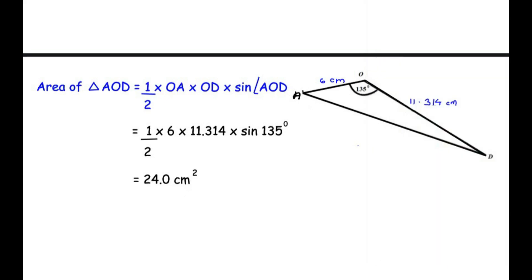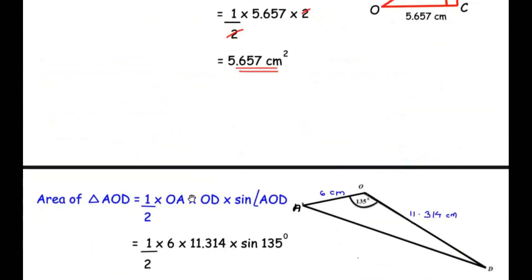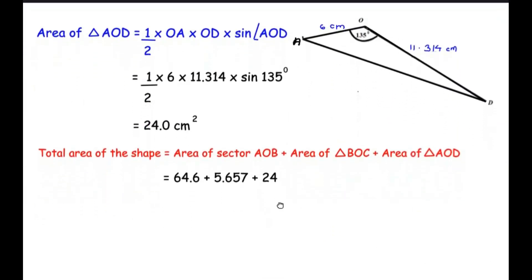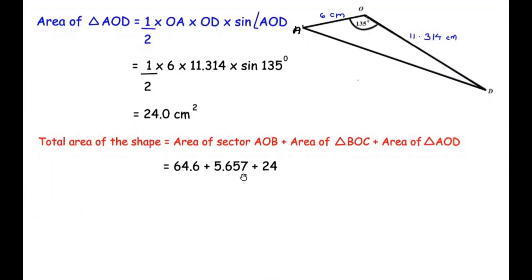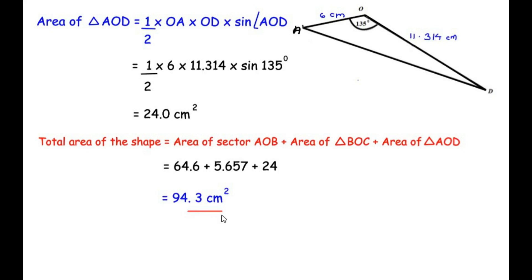To find the total area, we add all three areas: 64.6 plus 5.657 plus 24, which gives 94.257. Rounding to one decimal place, the total area of the shape is 94.3 centimeters squared.